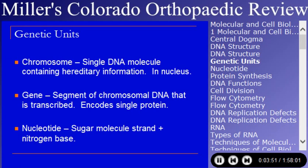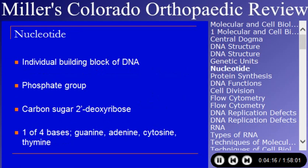A chromosome is a single DNA molecule containing hereditary information, located in the nucleus. A gene is a segment of chromosomal DNA that gets transcribed to encode a single protein — not every gene in your chromosome is transcribed. A nucleotide is a sugar molecule strand plus one of the four nitrogen bases, and is the individual building block of DNA, formed of a phosphate group, a carbon sugar (2-prime deoxyribose), and one of four bases: guanine, adenine, cytosine, or thymine. Adenine and thymine are always paired; guanine and cytosine are always paired.